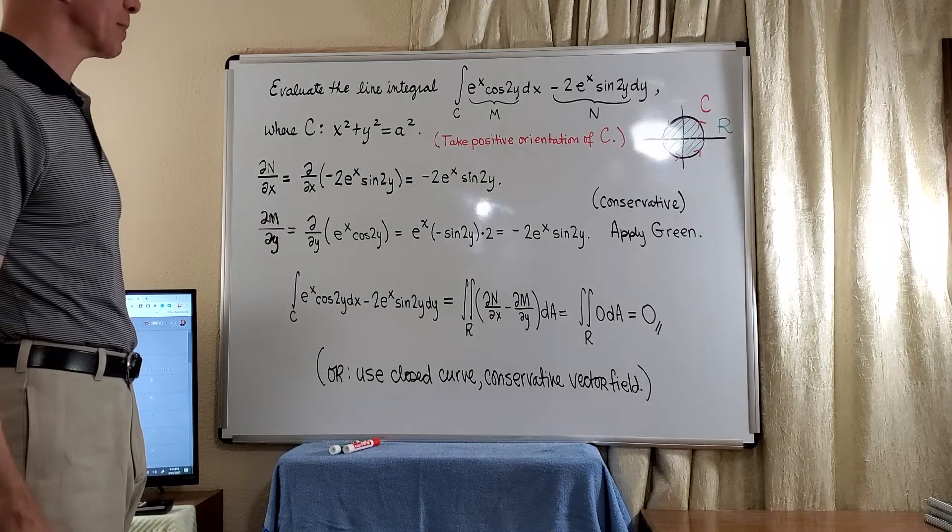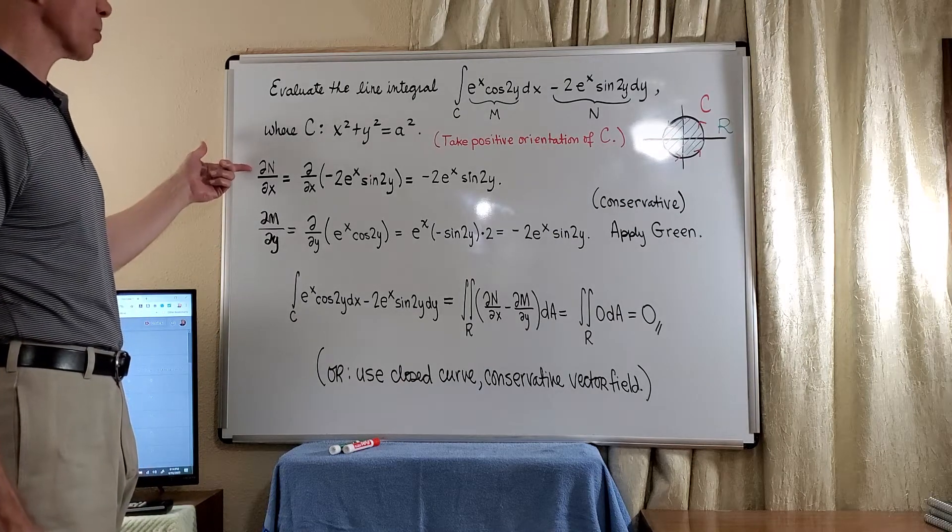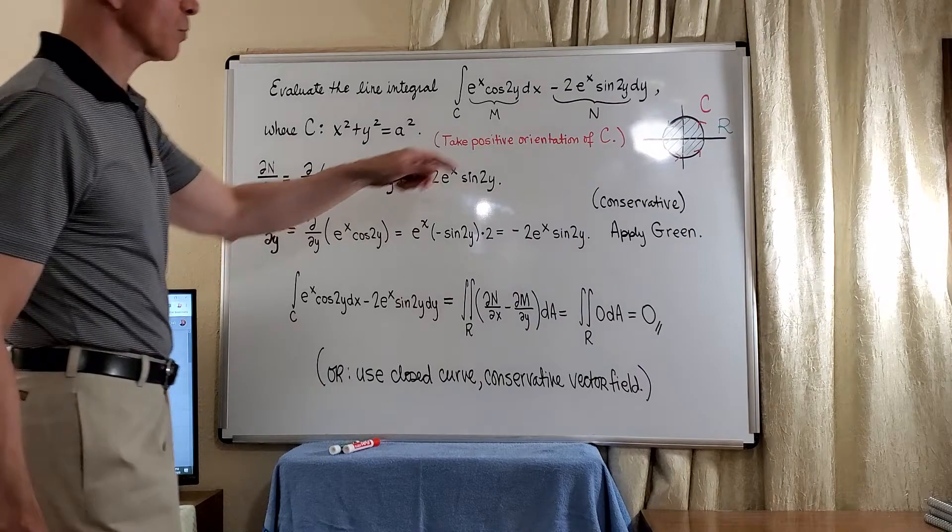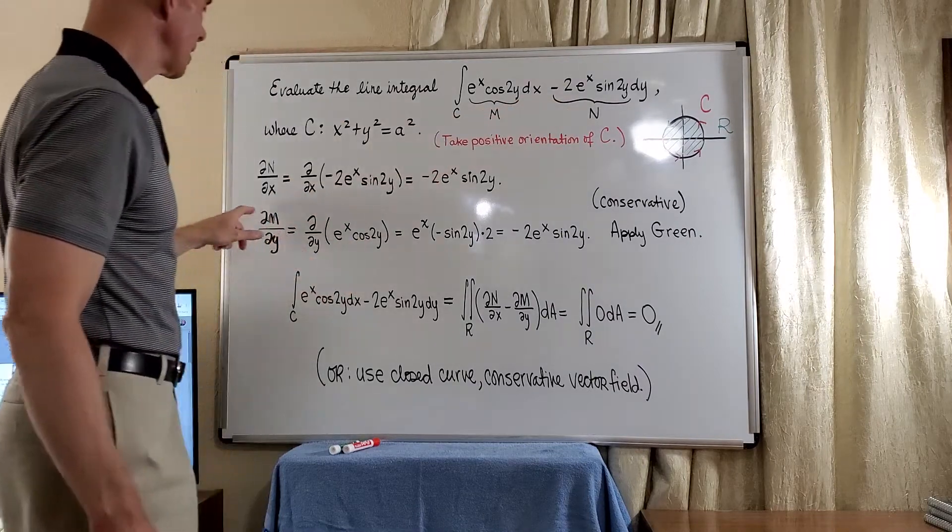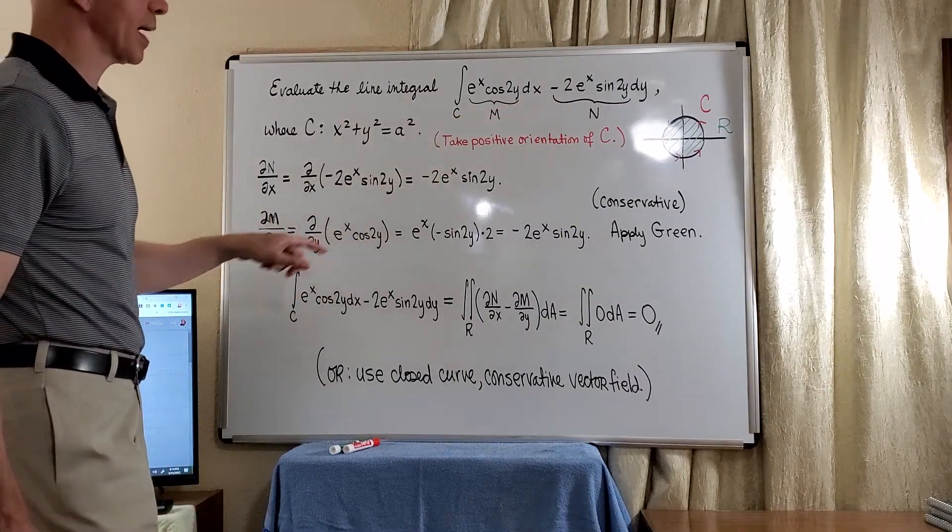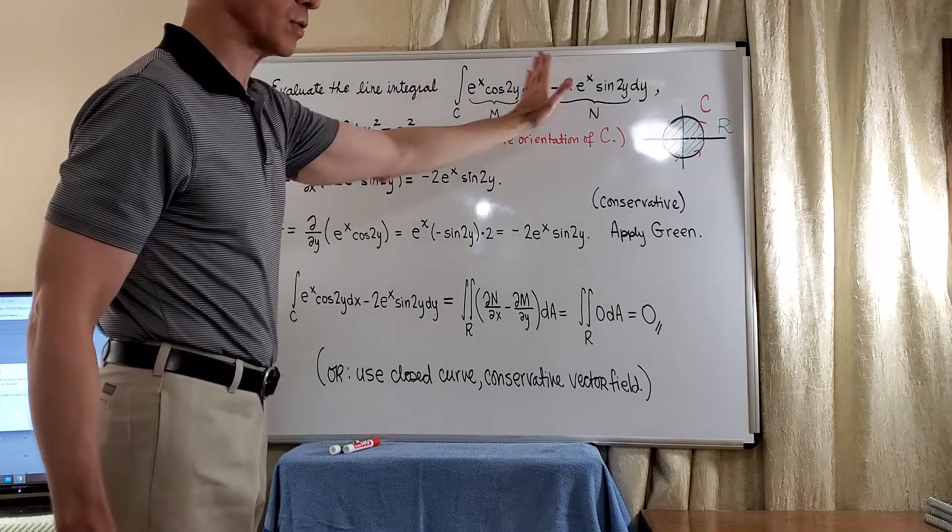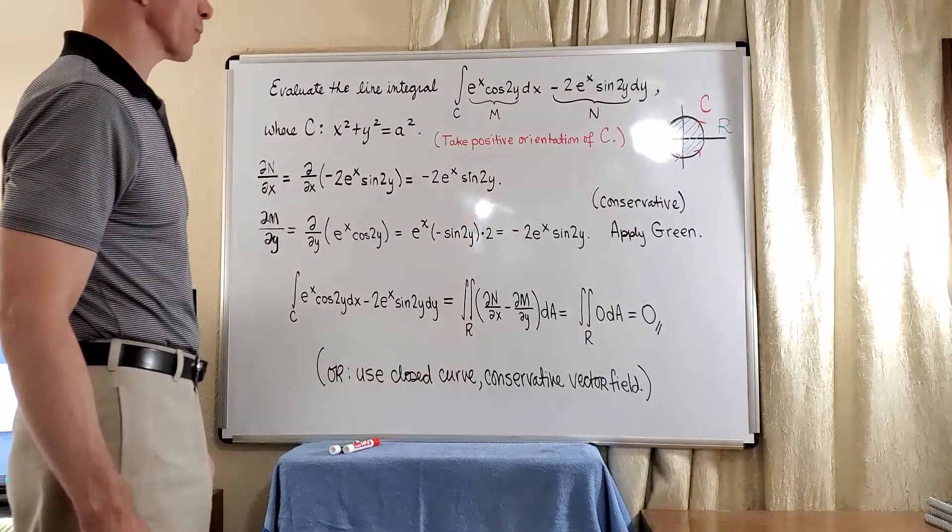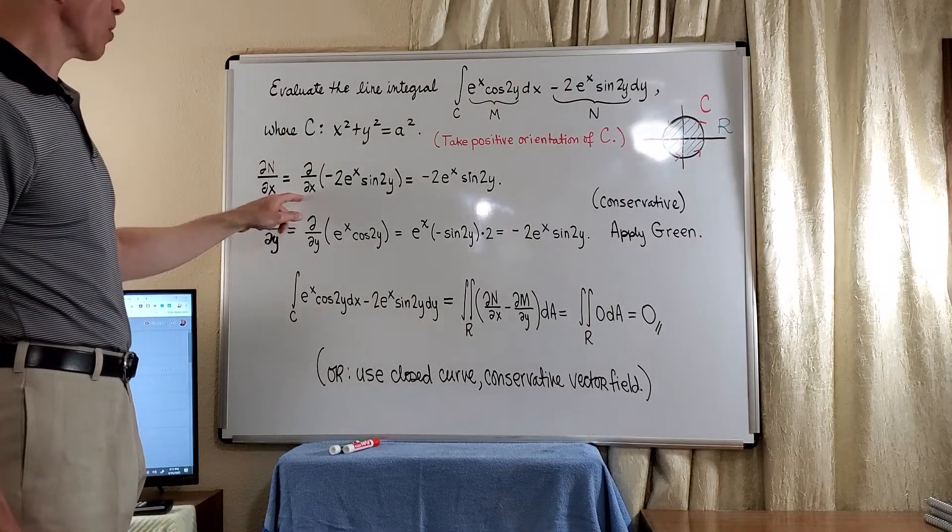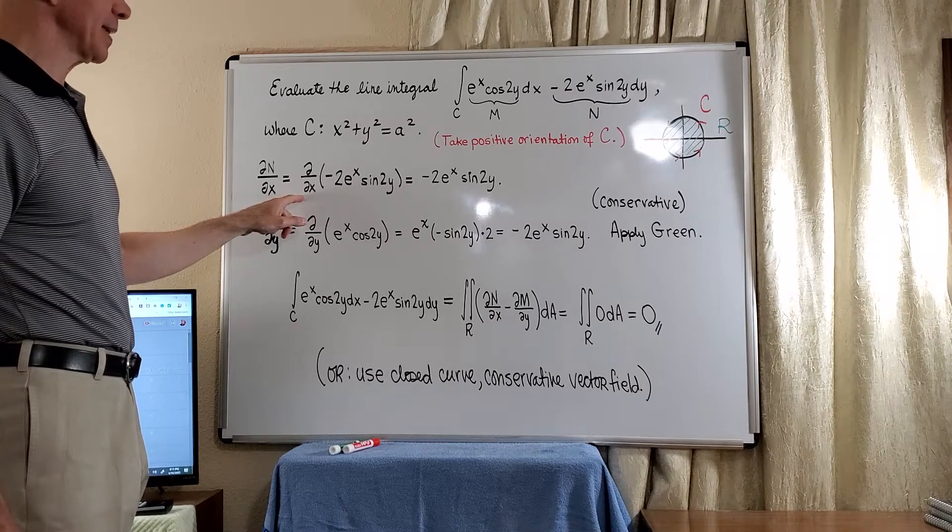So when we think of Green's Theorem, we think of having to compute the partial of n with respect to x, where n is this function, and the partial of n with respect to y, where m is this function. Notice the line integral written in differential form.